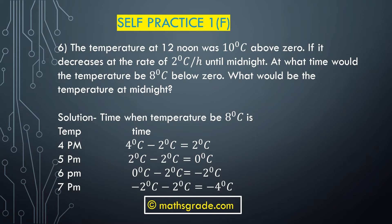At 4 PM the temperature is 4 minus 2 equals 2 degrees Celsius. Then at 5 PM: 2 minus 2 equals 0 degrees Celsius. And at 6 PM: 0 minus 2 equals minus 2 degrees Celsius.